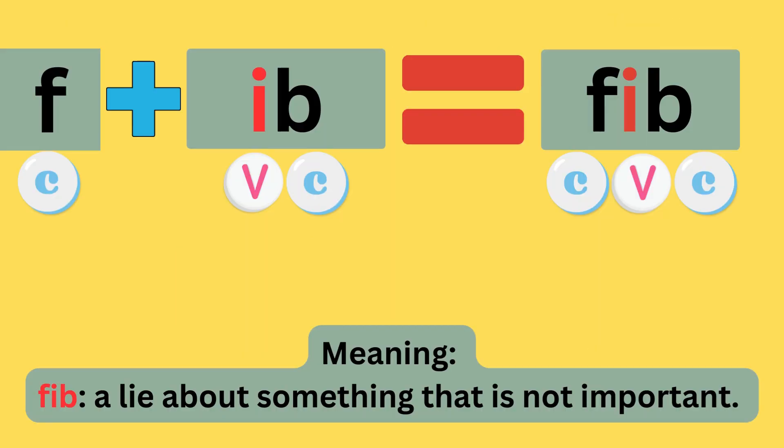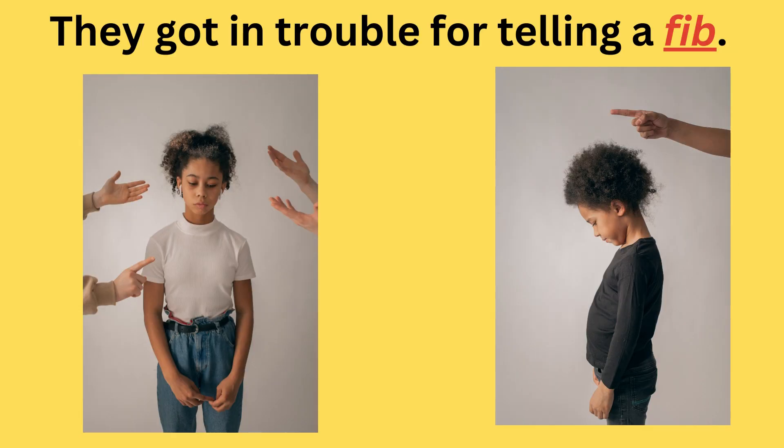F plus -ib equals fib. The sounds are: f-i-b — fib. The meaning is a lie about something that is not important. They got in trouble for telling a fib.